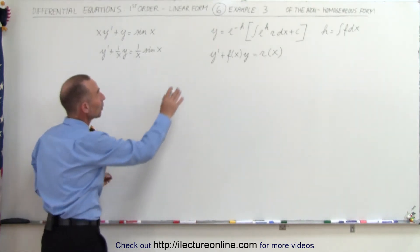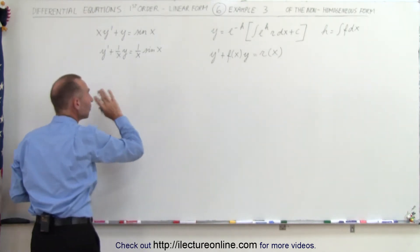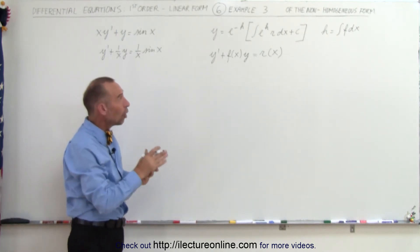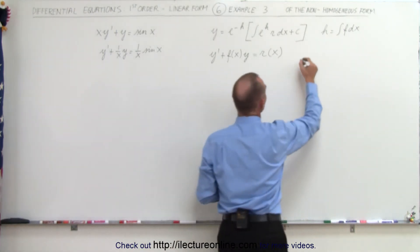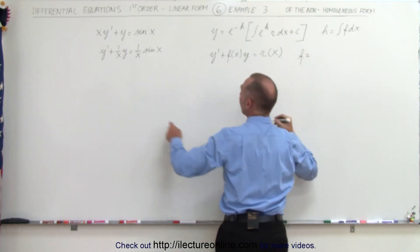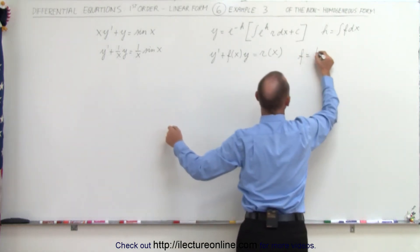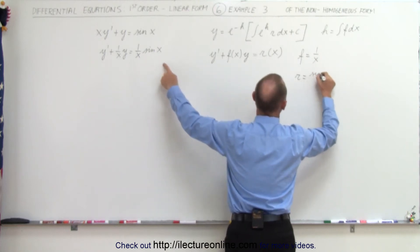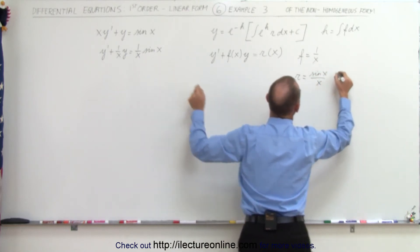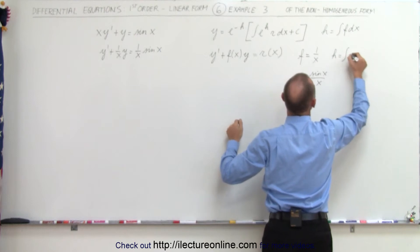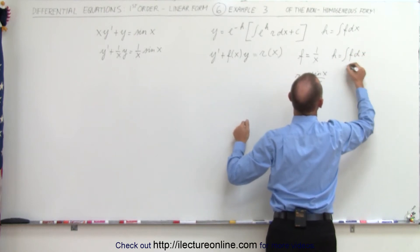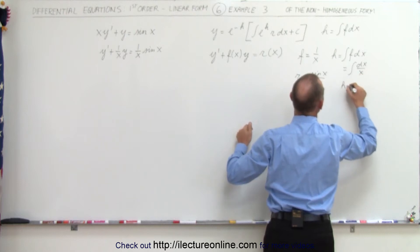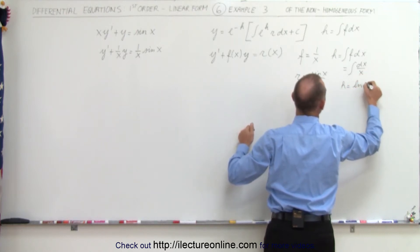So the general solution can be written as this. Let's identify what f, r, and h are equal to. In this case f is equal to 1 over x, r is equal to sine of x over x, and h is equal to the integral of f dx, which is the integral of dx over x, which means h is equal to the natural log of x.